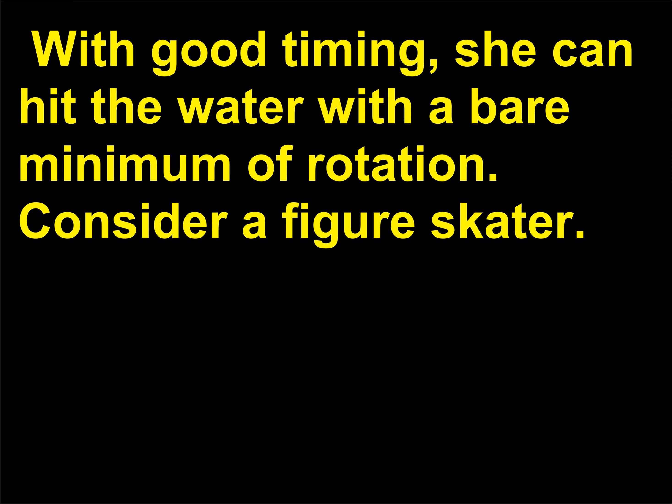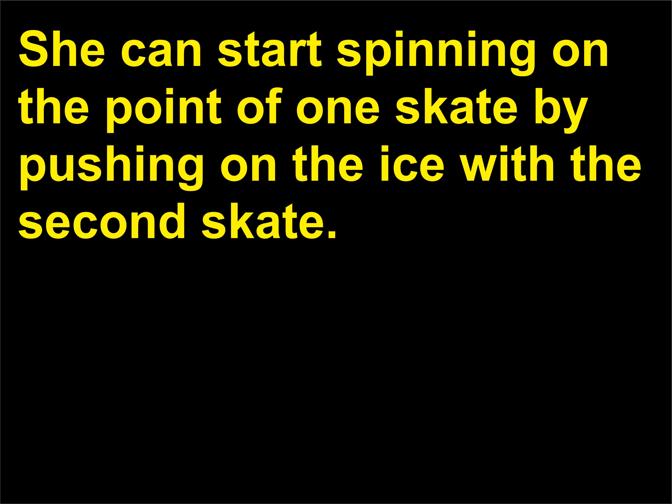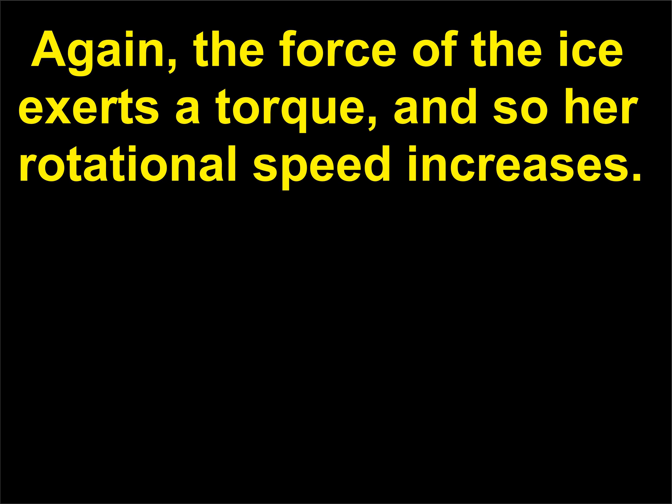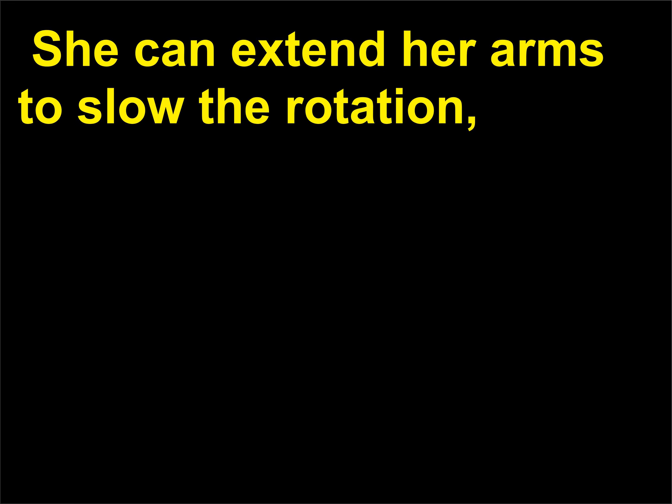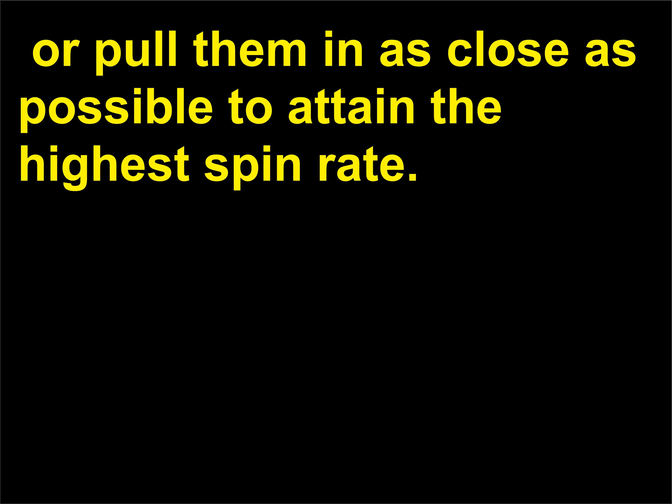Consider a figure skater. She can start spinning on the point of one skate by pushing on the ice with the second skate. The force of the ice exerts a torque, and her rotational speed increases. She can extend her arms to slow the rotation, or pull them in as close as possible to attain the highest spin rate.